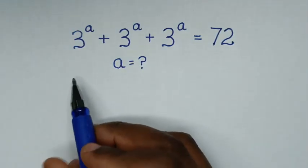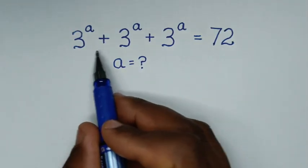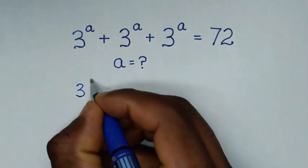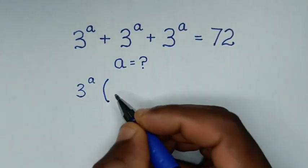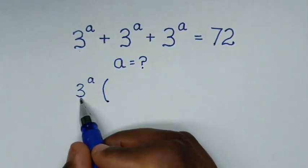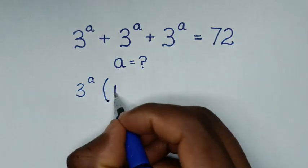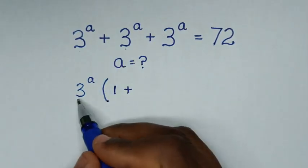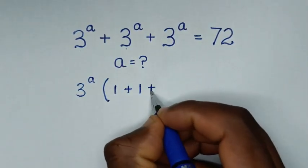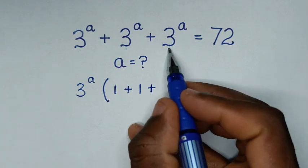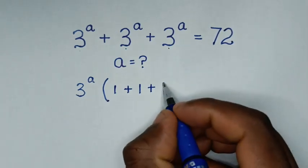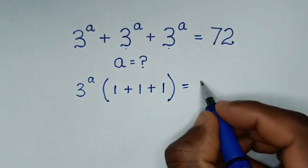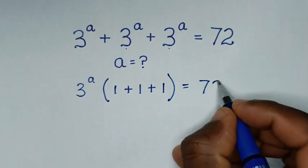Now in the first step, from here 3^a is common. So we'll take 3^a out of the bracket. Then 3^a divided by 3^a is 1, plus 3^a divided by 3^a is 1, plus 3^a divided by 3^a is 1, bracket is equal to 72.